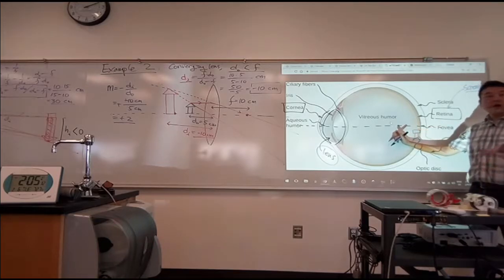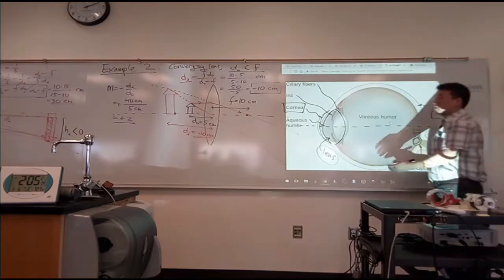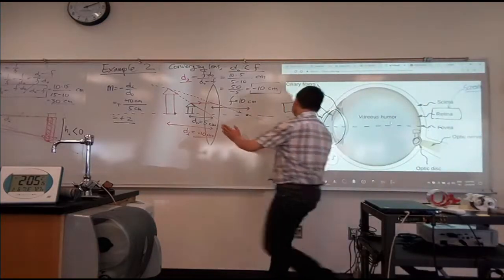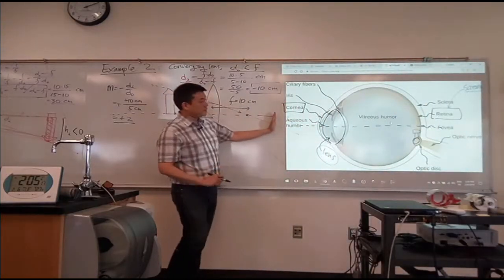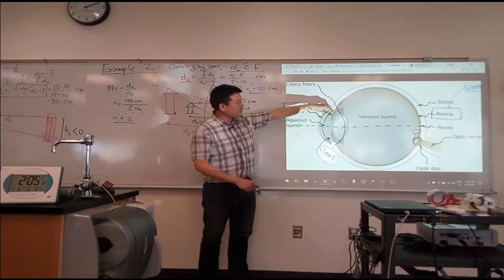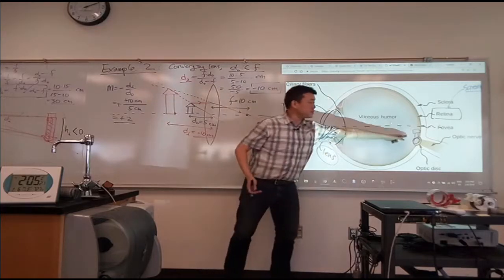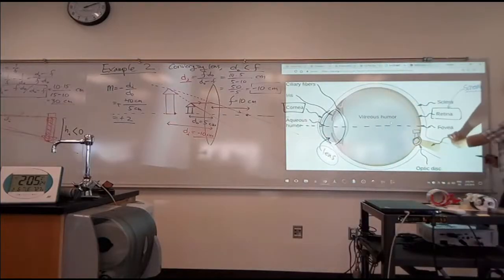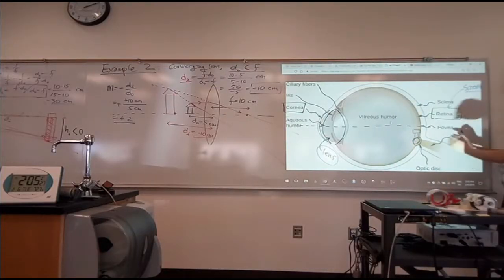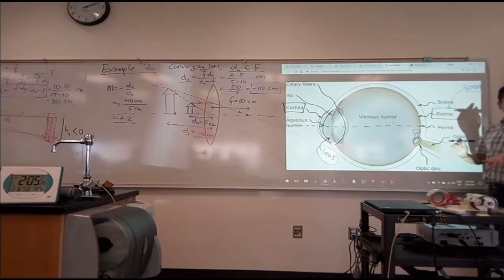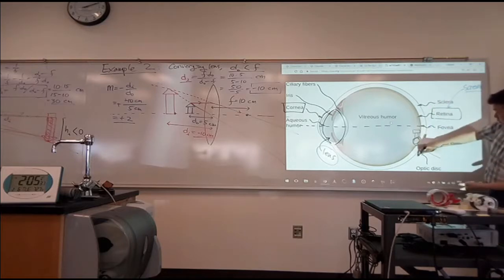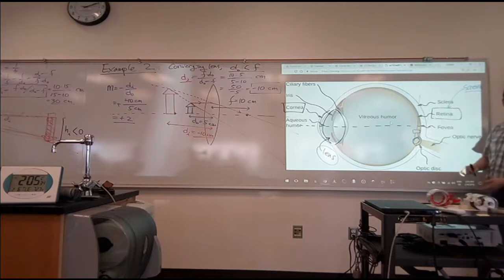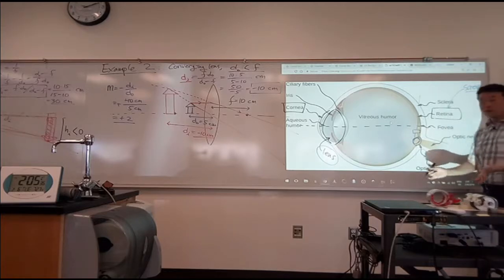Or if you are a farsighted person, when an object is placed too close, you cannot make the focal length short enough to form the image on the retina — instead, the image forms way out beyond. Those are the cases when something's not in focus. But when something is in focus, the retina is the location where the real image has to form.